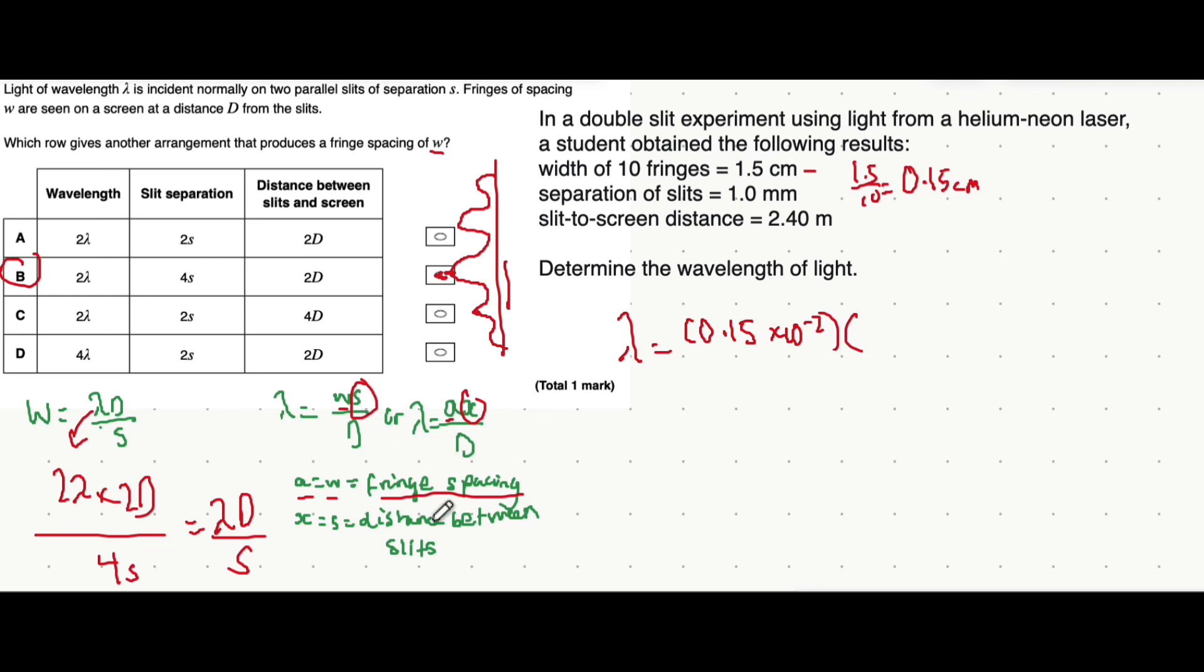You multiply that by the distance between the double slits, which is given as 1 millimeter. Again, convert that into meters by dividing by 1000 or multiplying by 10 to the minus 3. Then divide all of that by the distance between the slit and screen, which is 2.4 meters, already given in meters so we don't need to convert it.